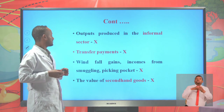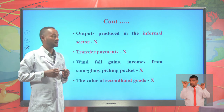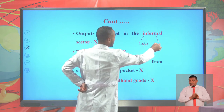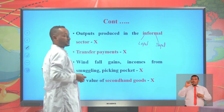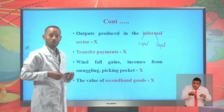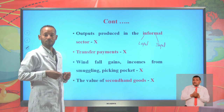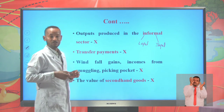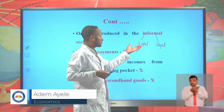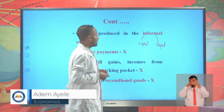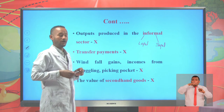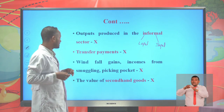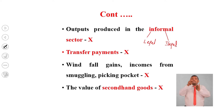Outputs produced in the informal sector are not included in estimating GDP. The informal sector is categorized into two: legal and illegal. The legal informal sector includes local liquor production and similar activities — they are legal but informal because they are not registered for tax by the Inland Revenue Authority. The illegal informal sector includes drug dealing and prostitution. None of these are included in the estimation of GDP.